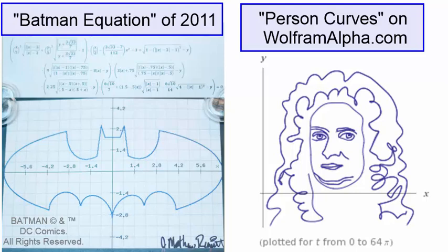Second, if you go to WolframAlpha.com and search for person curves, you'll find many incredibly intricate mathematically defined curves of famous figures throughout history and modern times, such as Isaac Newton here.